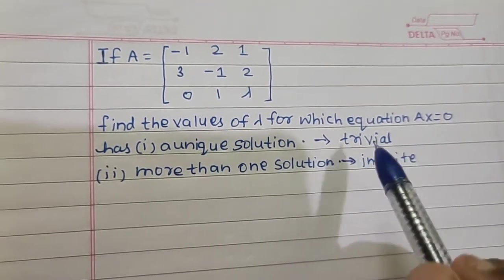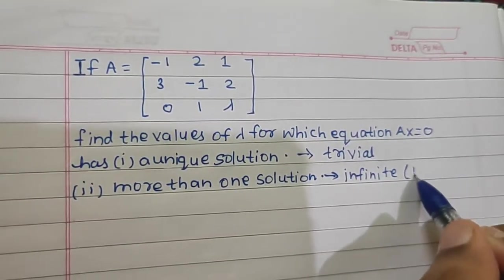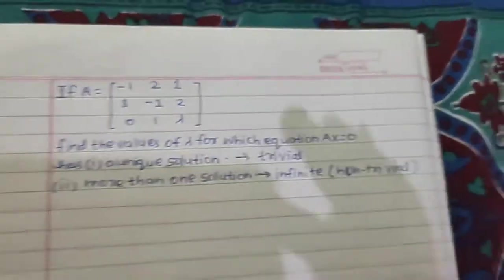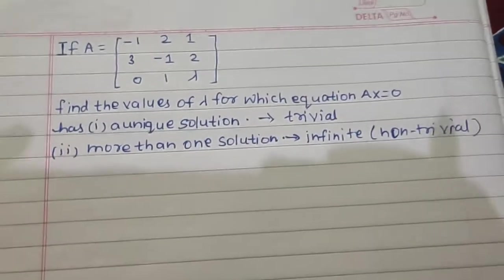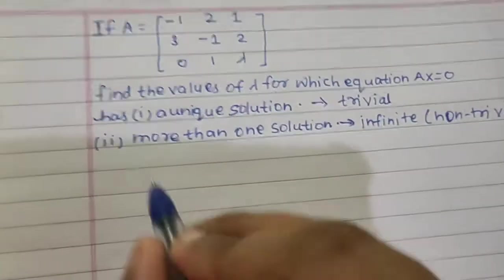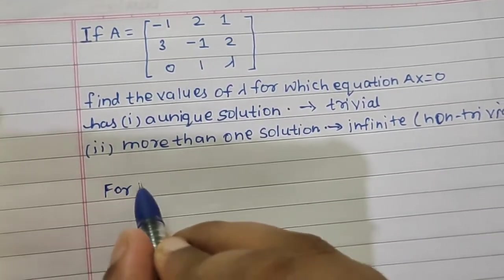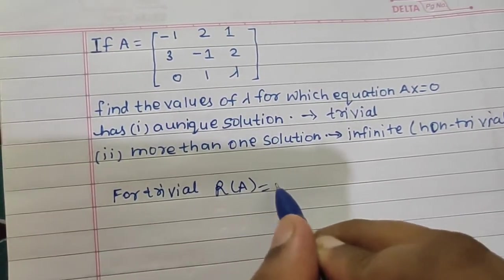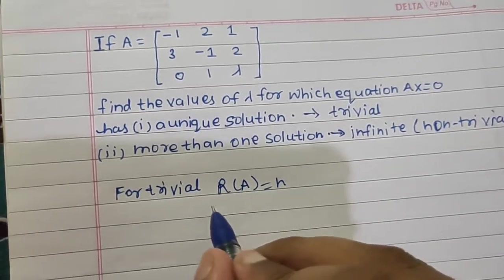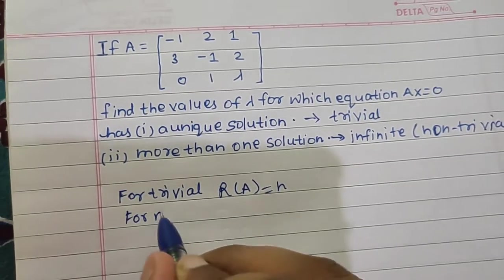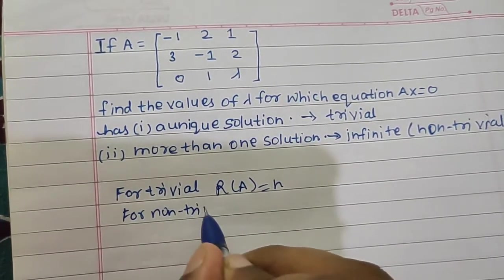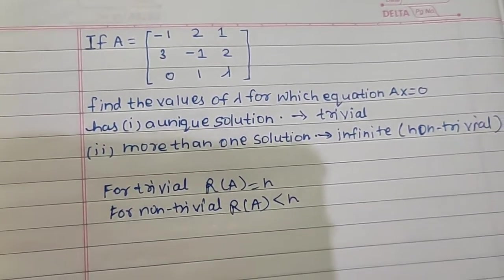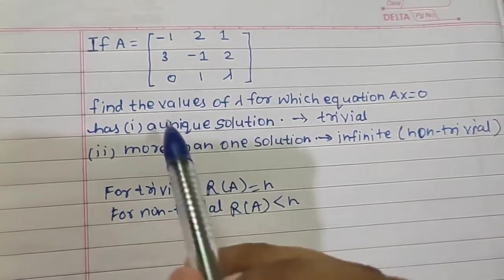We need to find the value of lambda for trivial and infinite means non-trivial. Also we know the concept that for trivial solution, rank of A equals to number of variables, let's say n. And for non-trivial, the rank of A matrix is less than number of variables.